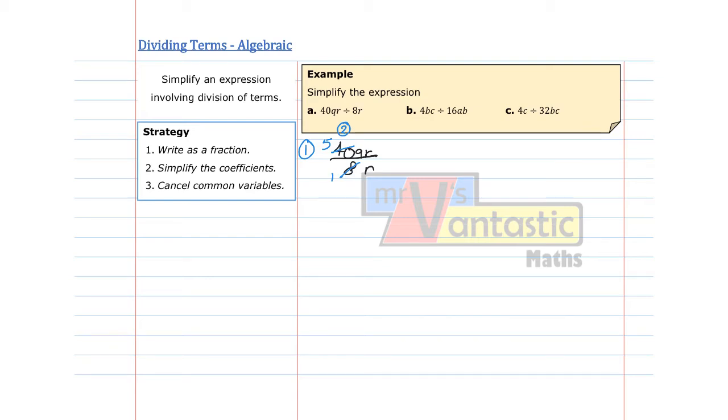Secondly we are going to have a look at these variables. We don't have any Q's that we can cancel. There is only a Q in the numerator, not in the denominator. But we do have an R on both the numerator and denominator. So we can cancel those two and remove them.